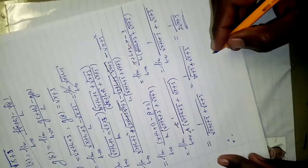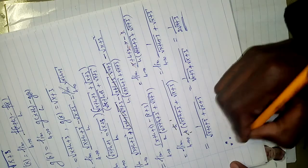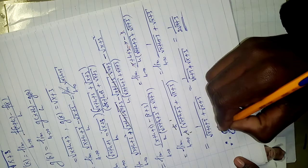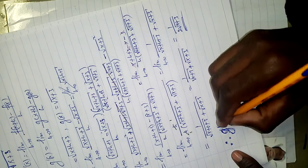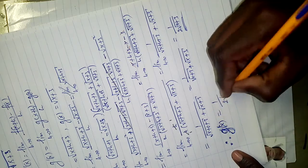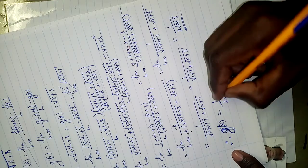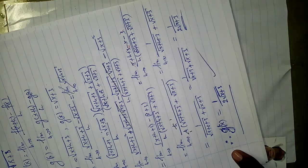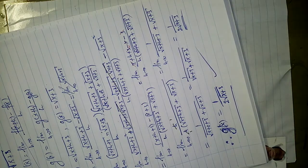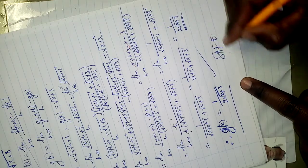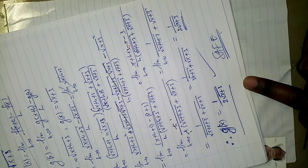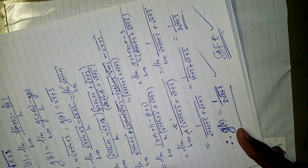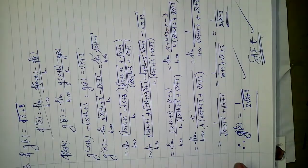Therefore g'(x) equals 1 over 2√(x+3). That is our answer. I love you all — keep safe and please practice. Study hard, get this done, and do not let corona disturb you. See you in the next video!